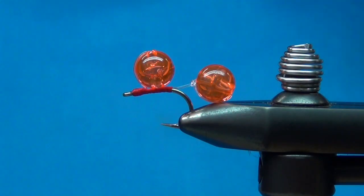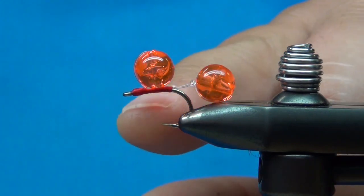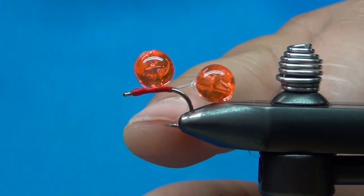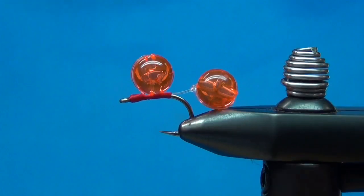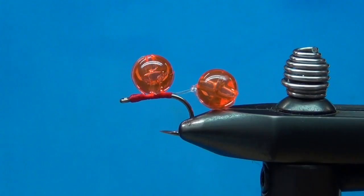This is just two trout beads and some eight pound mono, 140 denier ultra thread from UTC, and a Daiichi x510 size 10 steelhead hook. This is a very simple fly.